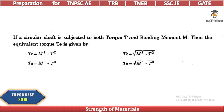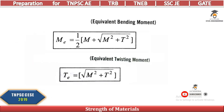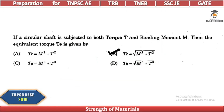If a circular shaft is subjected to both torque T and bending moment M, the equivalent torque is given by the square root of M² plus T². That is, T_eq = √(M² + T²).